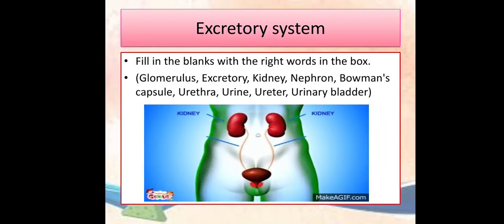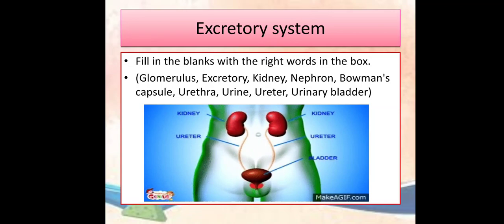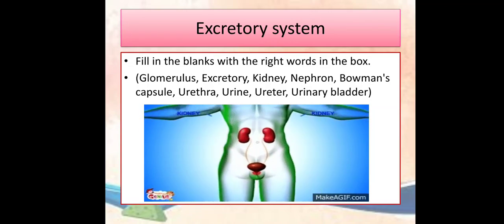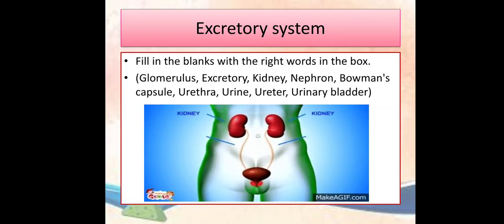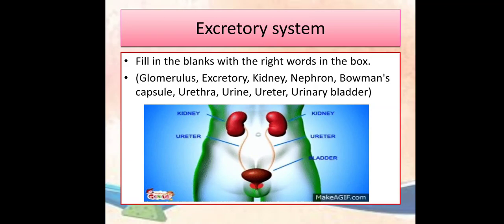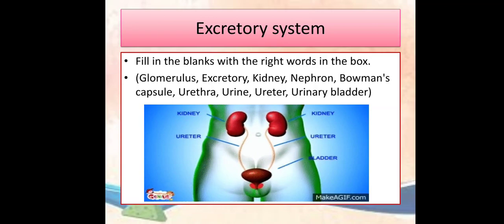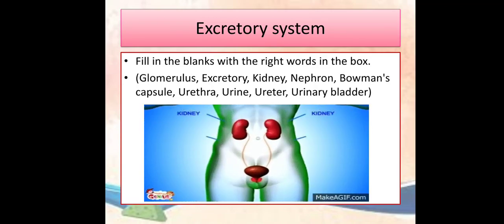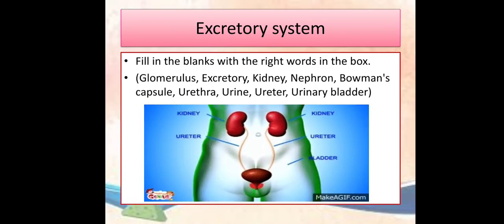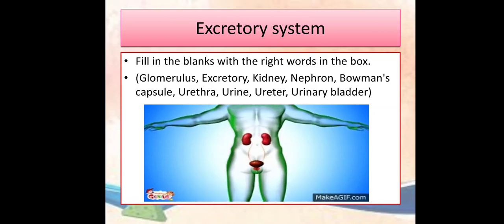The next life process is the excretory system. Fill in the blanks with the right words in the box. The words are: glomerulus, excretory, kidney, nephron, woman's capsule, urethra, urine, ureter, and urinary bladder.